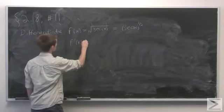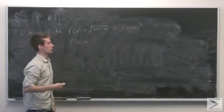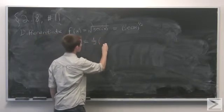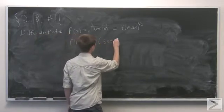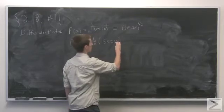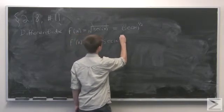So f prime of x will equal 1 half times secant of x. That would bring down the power by 1, so minus 1 half.